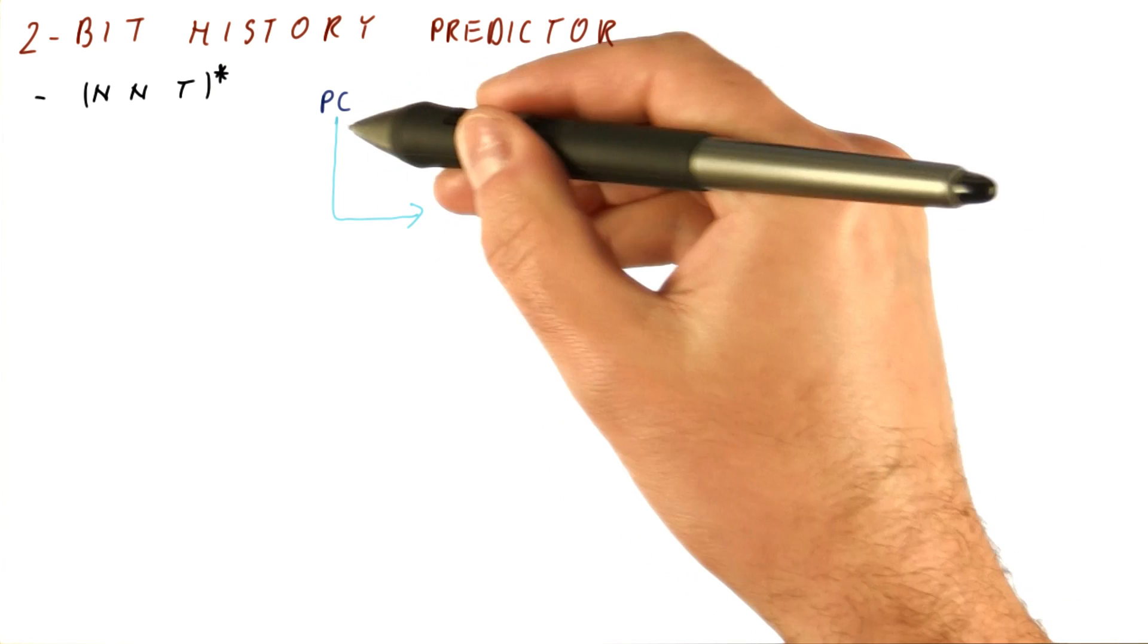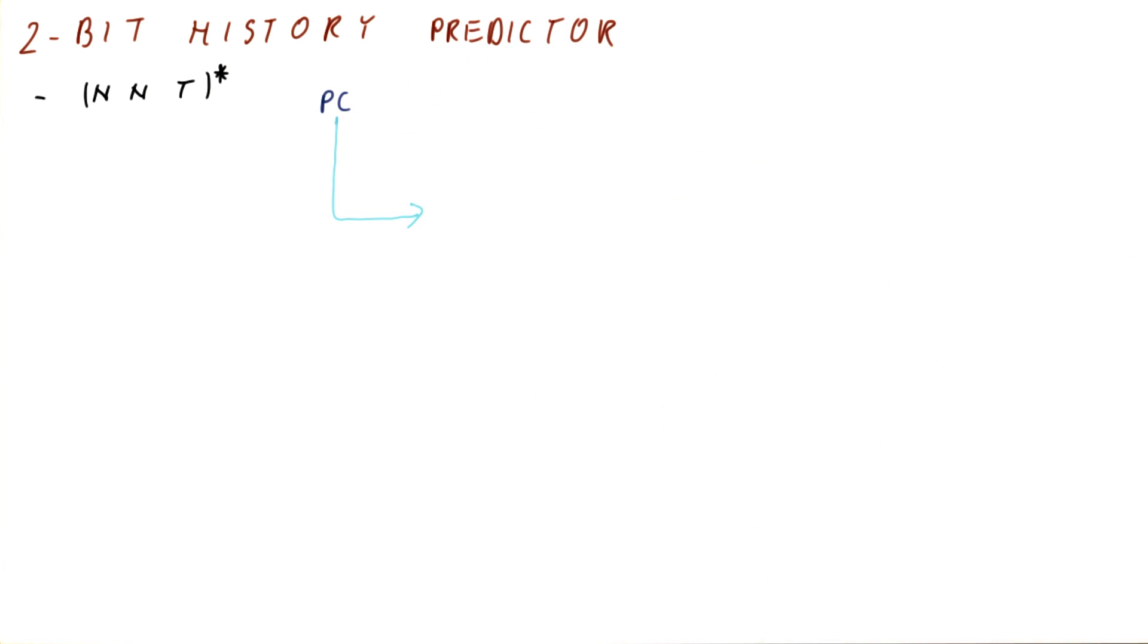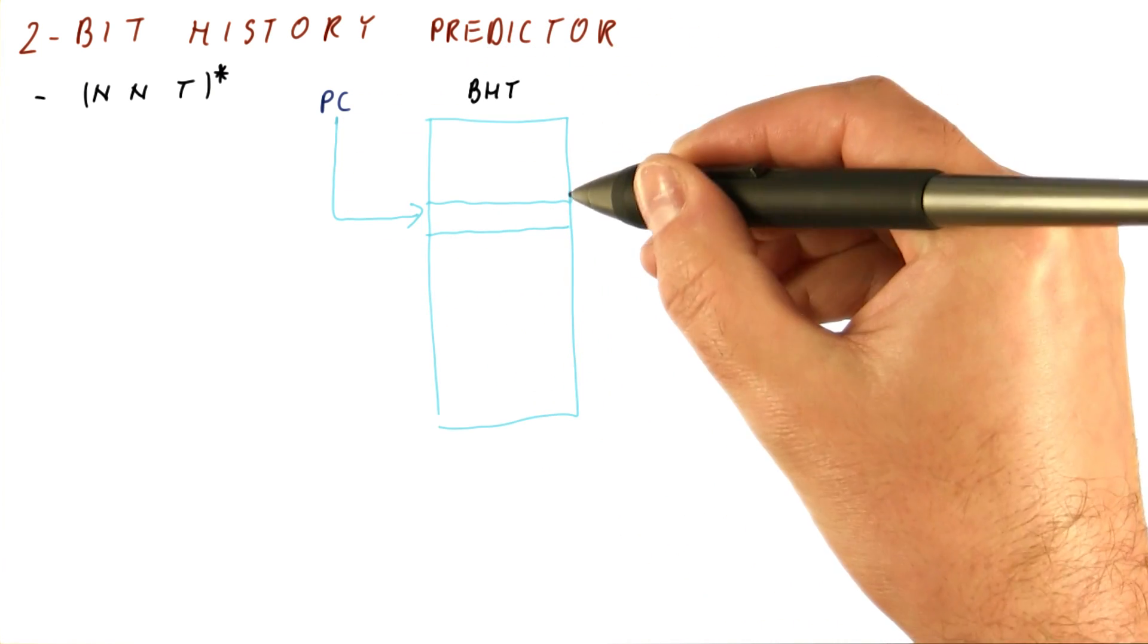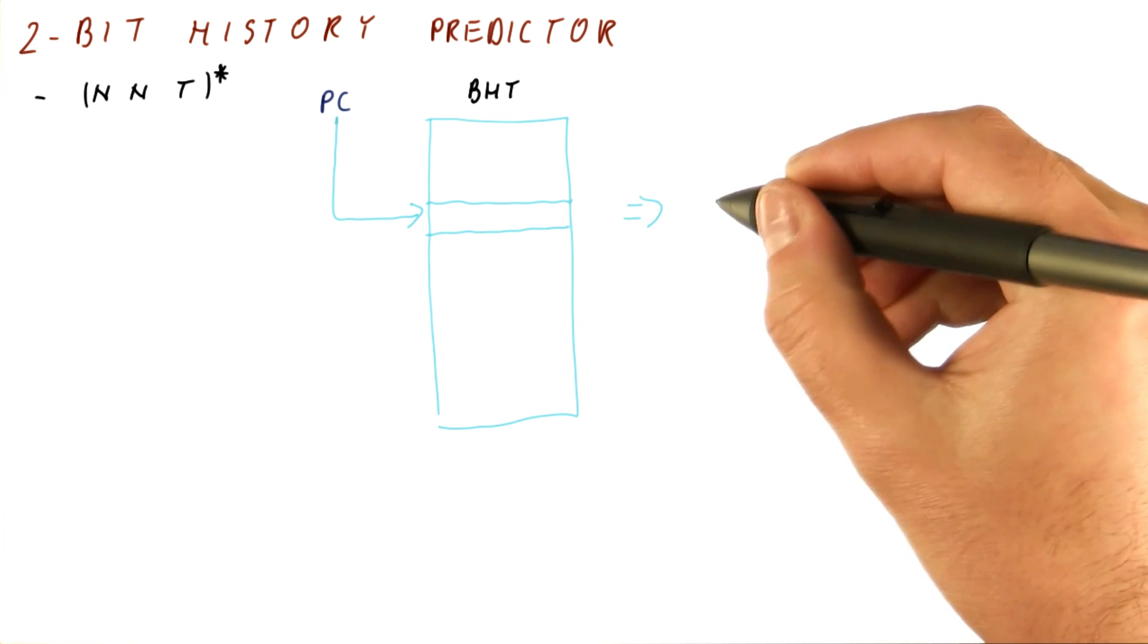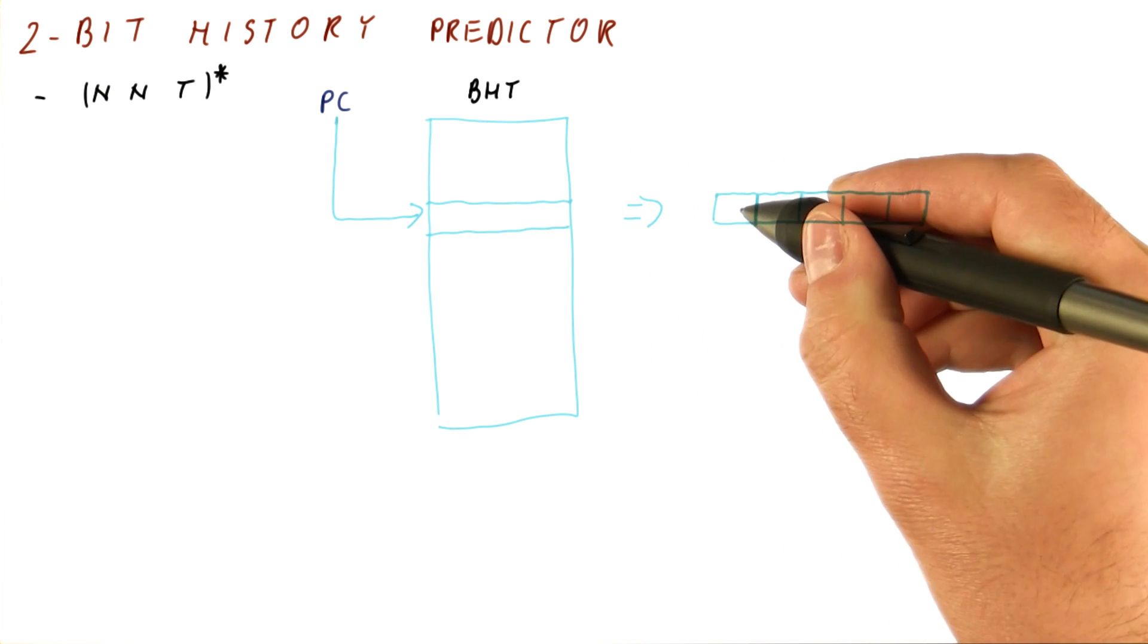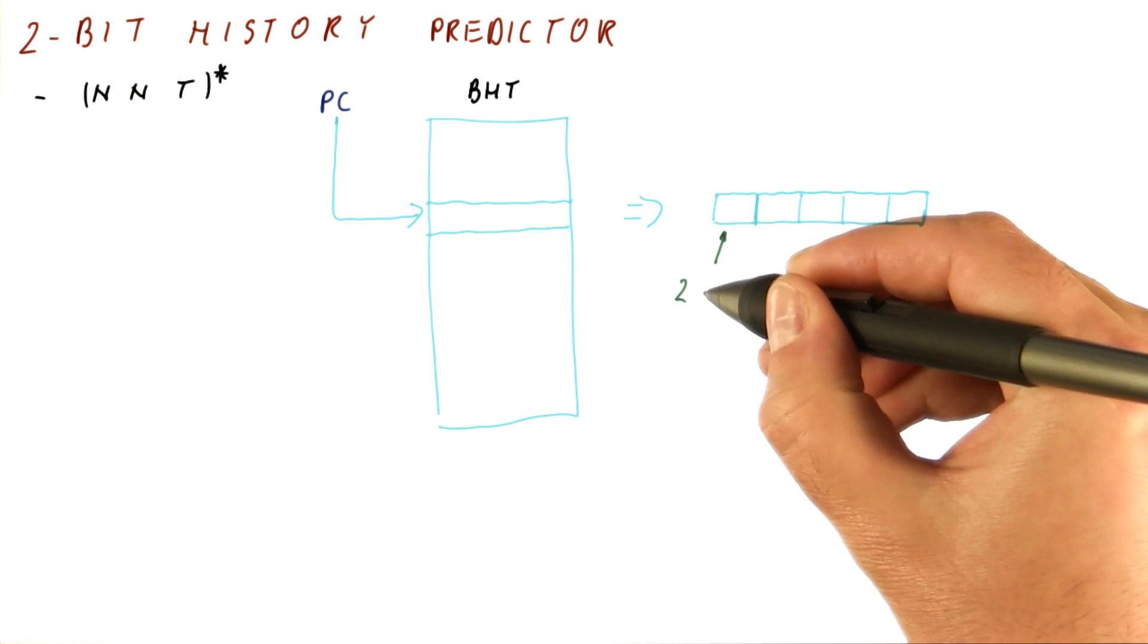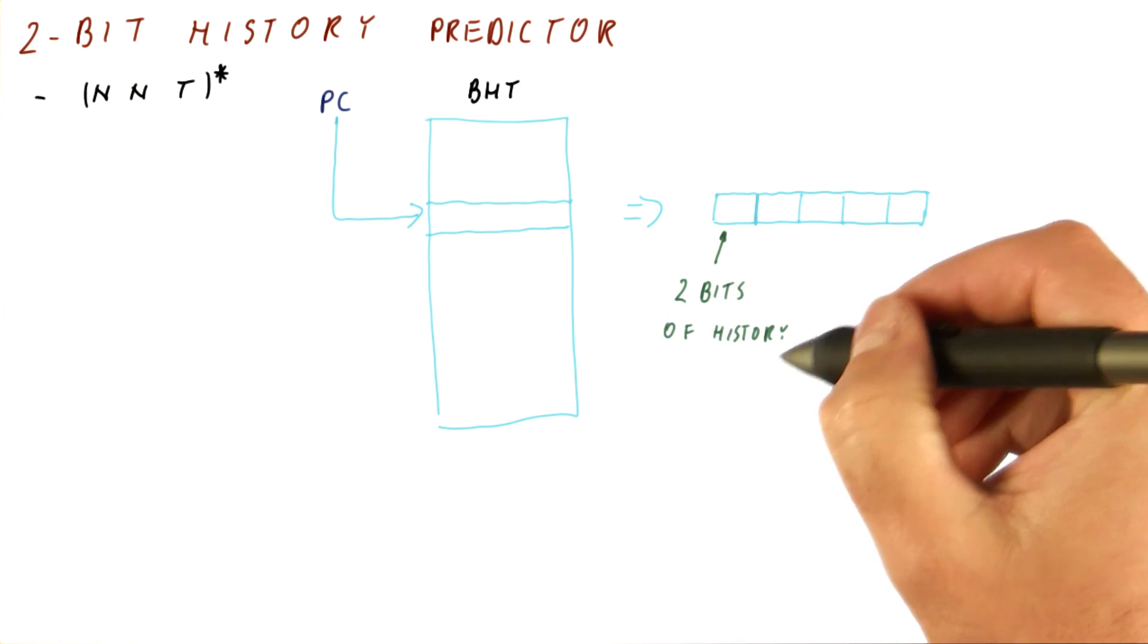Same as before, we take the PC and we index into the branch history table from which we get an entry. Now, however, the entry we get has five pieces. It has two bits of history.